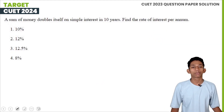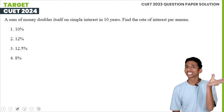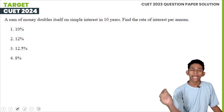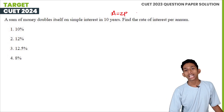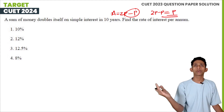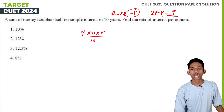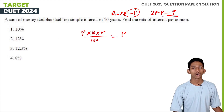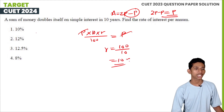A sum of money doubles itself on simple interest in 10 years. Since the total amount is 2P, simple interest = 2P − P = P. Using SI = P × n × r / 100: P = P × 10 × r / 100, so r = 100/10 = 10%. The rate of interest is 10%.